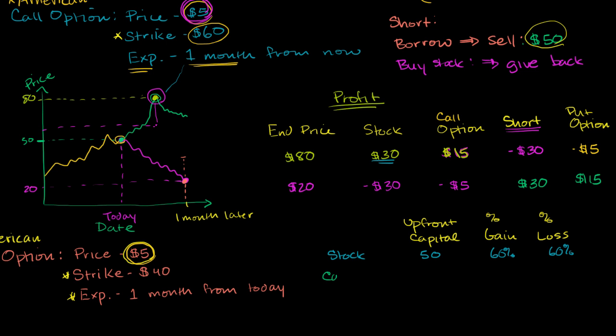Now let's think about the scenario with the call option. To buy the call option, it only cost us $5, so we only had to put $5 up front. And in the scenario where the stock went up to $80, we figured out that we were able to profit $15 net of the price of the option. So this was our pure profit. So on a base of a $5 investment, we were able to get $15 of profit, so we were able to get a 300% gain.